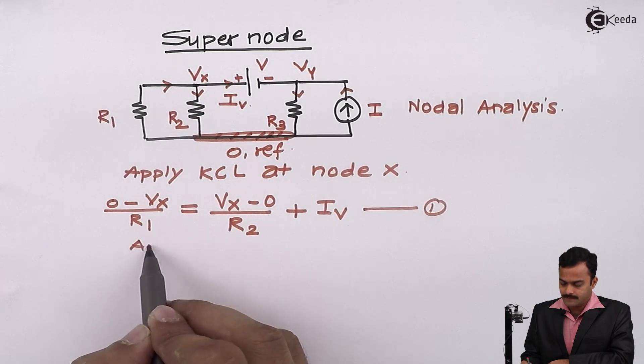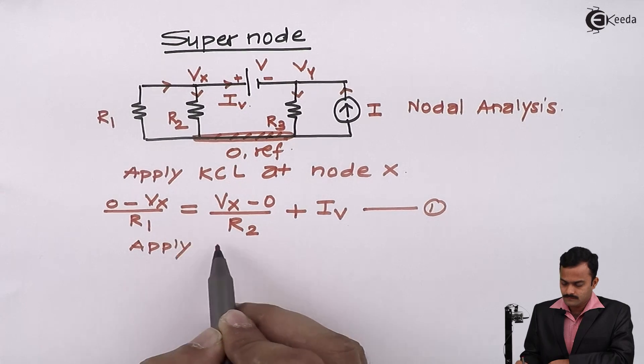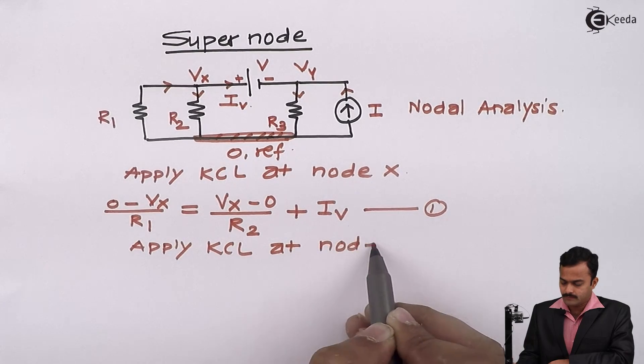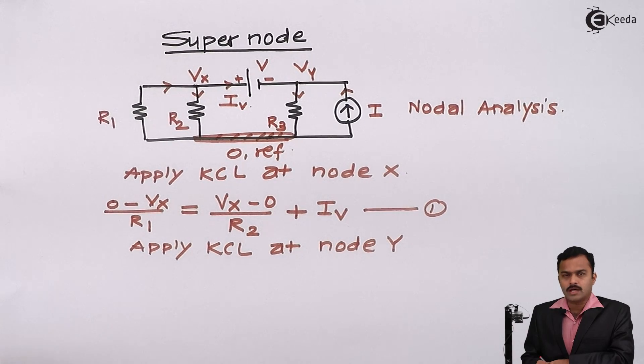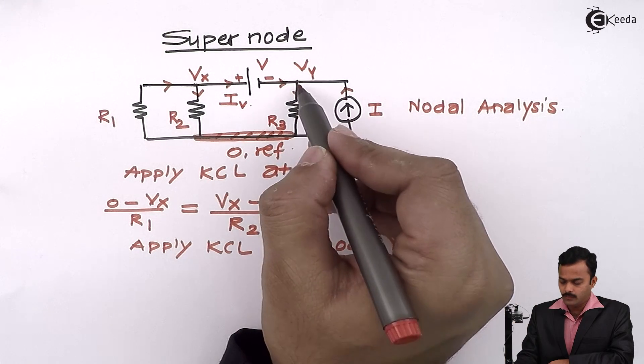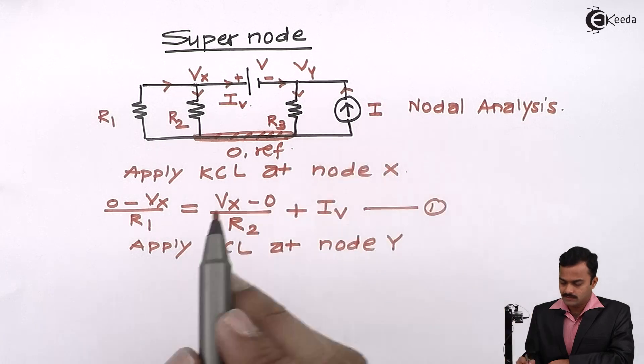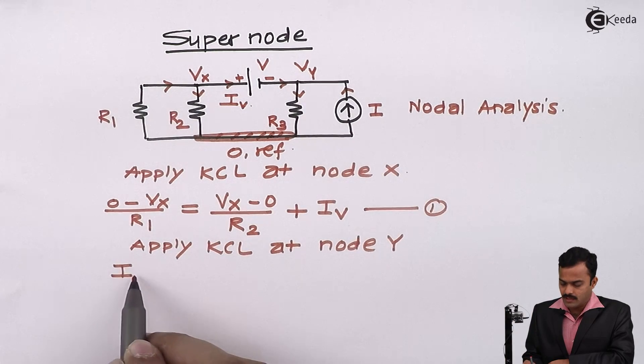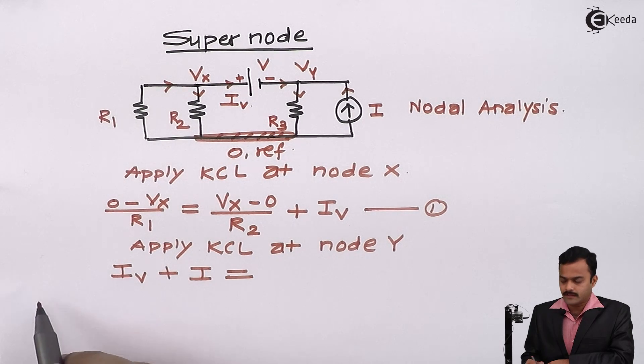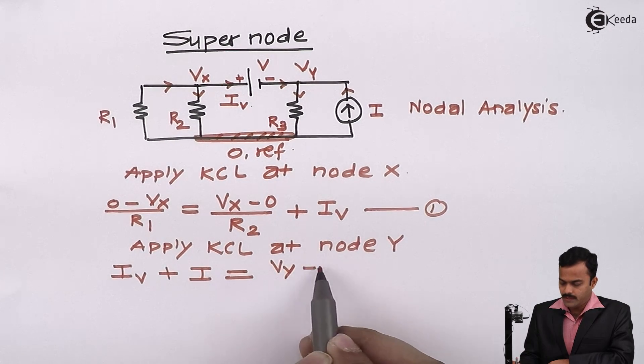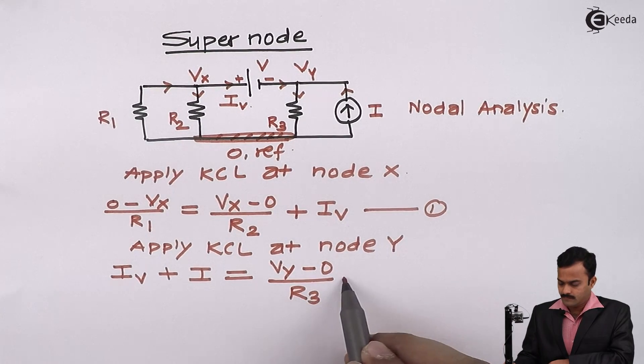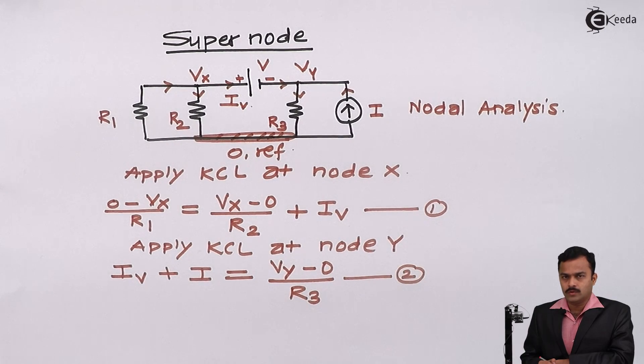Similarly, I can apply KCL at node y. So at node y, this current is incoming along with this I and only outgoing current is current flowing through R3. So I will write equation IV plus I equal to Vy minus 0 divided by R3. This is equation number 2.